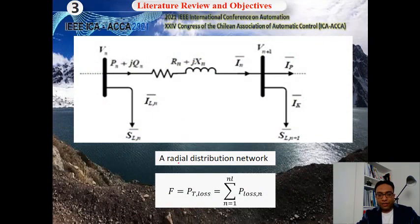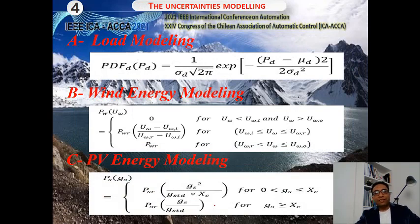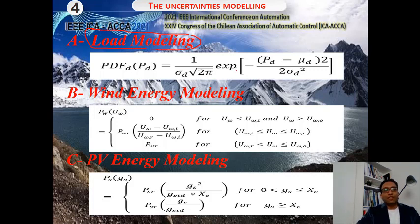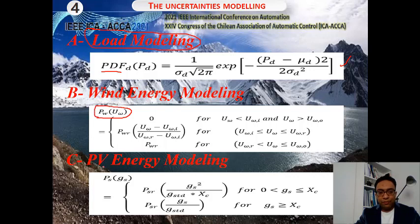Here we see a radial distribution network. We present a sample for a radial distribution network, with our objective function being the minimization of power loss. For uncertainties modeling, we consider load modeling, applying the probability density function as shown in this equation. We also consider wind energy modeling for wind power, and PV energy modeling for the power generated from the PV solar system.